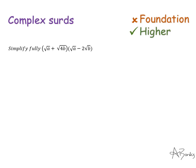Here's another complex surds question. In this one, they're using algebra to really test that you understand how to calculate with surds. So it says simplify fully (√a + √4b)(√a - 2√b). I'm just going to expand those double brackets. So I have √a times √a is a. √a times -2√b is -2√ab. And then I have √4b times √a, that's plus √4ab. And then √4b times -2√b gives me -8√4b².